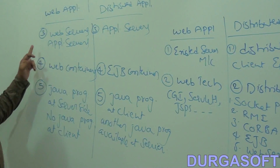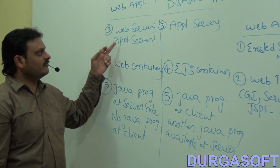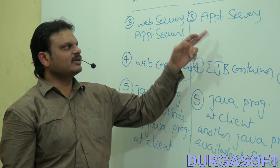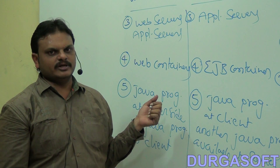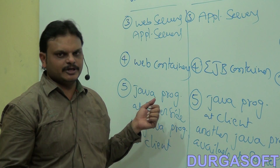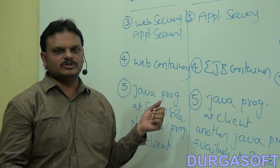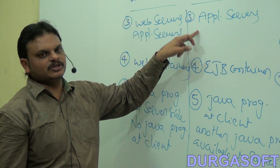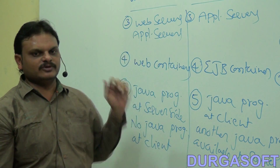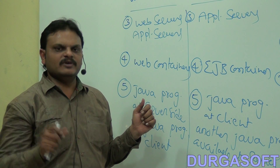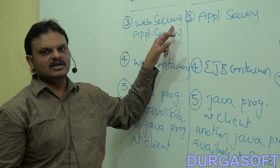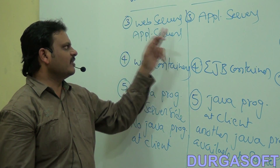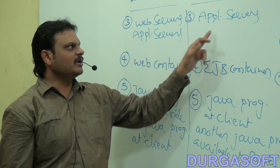Web applications are a collection of web components like Servlets and JSPs, executed by a web container. Distributed applications are a collection of EJB components, executed by an EJB container. In application servers, both a web container and an EJB container are available. Web applications have Java programs only at the server side; distributed applications have Java programs at both client and server side.